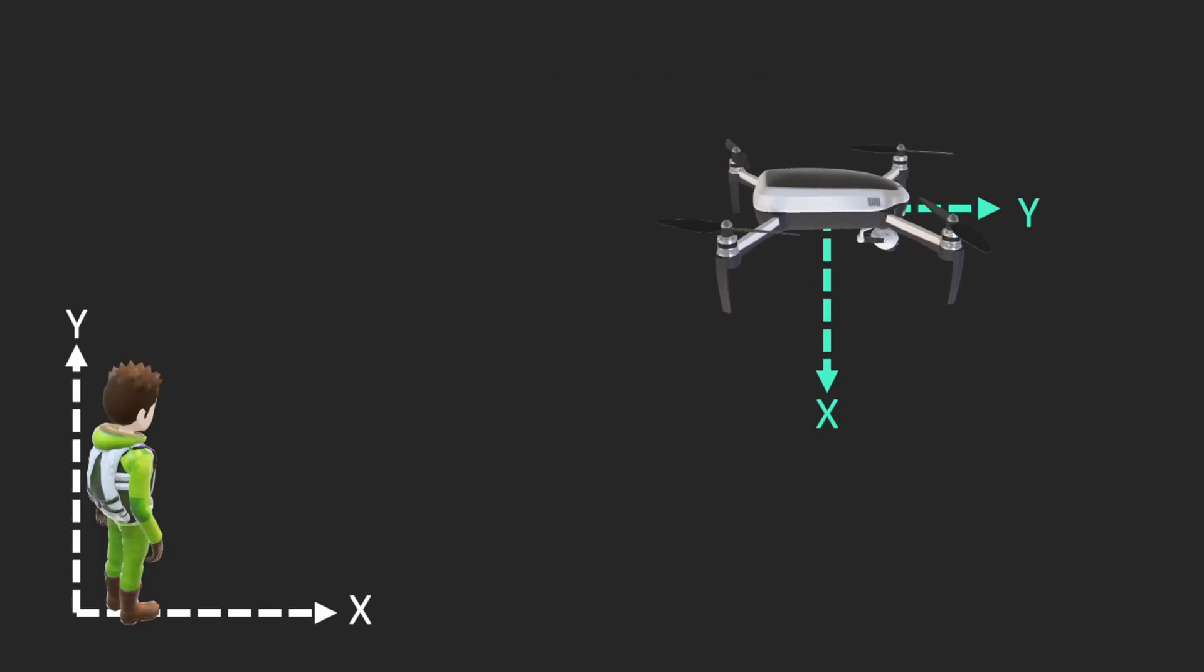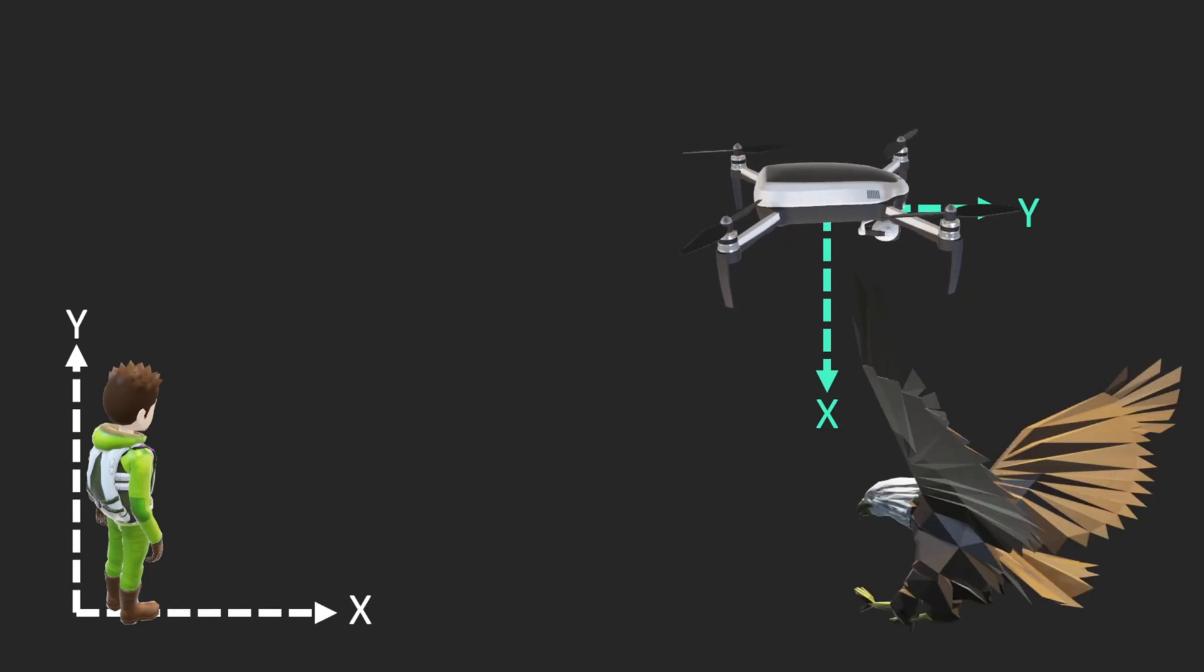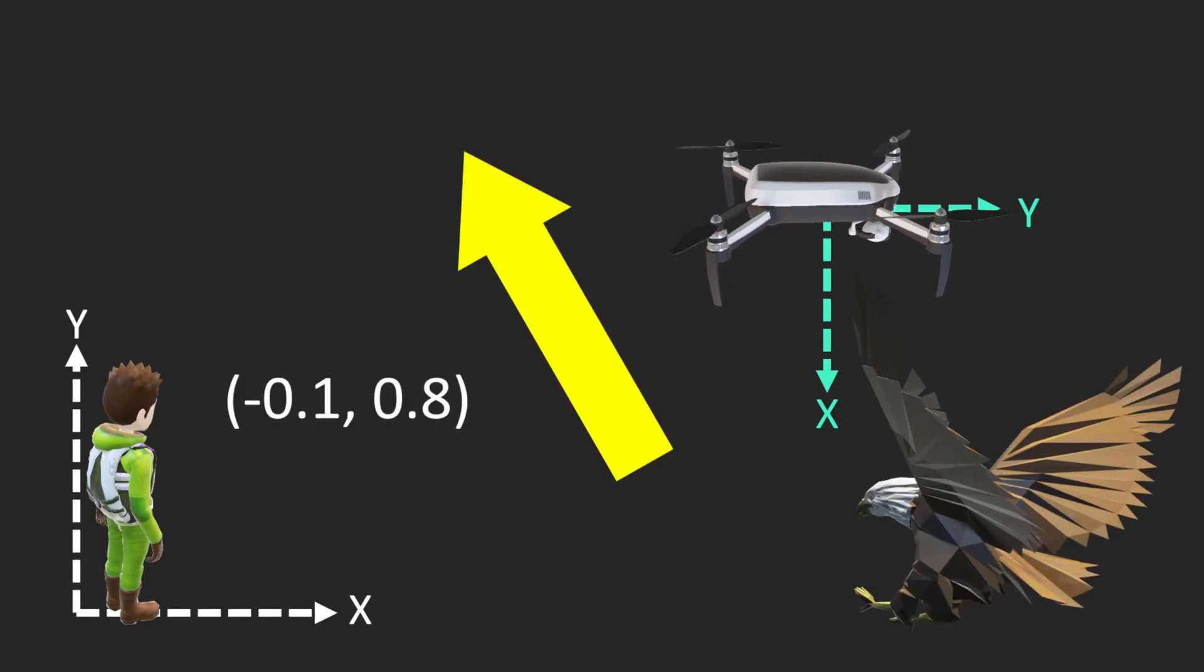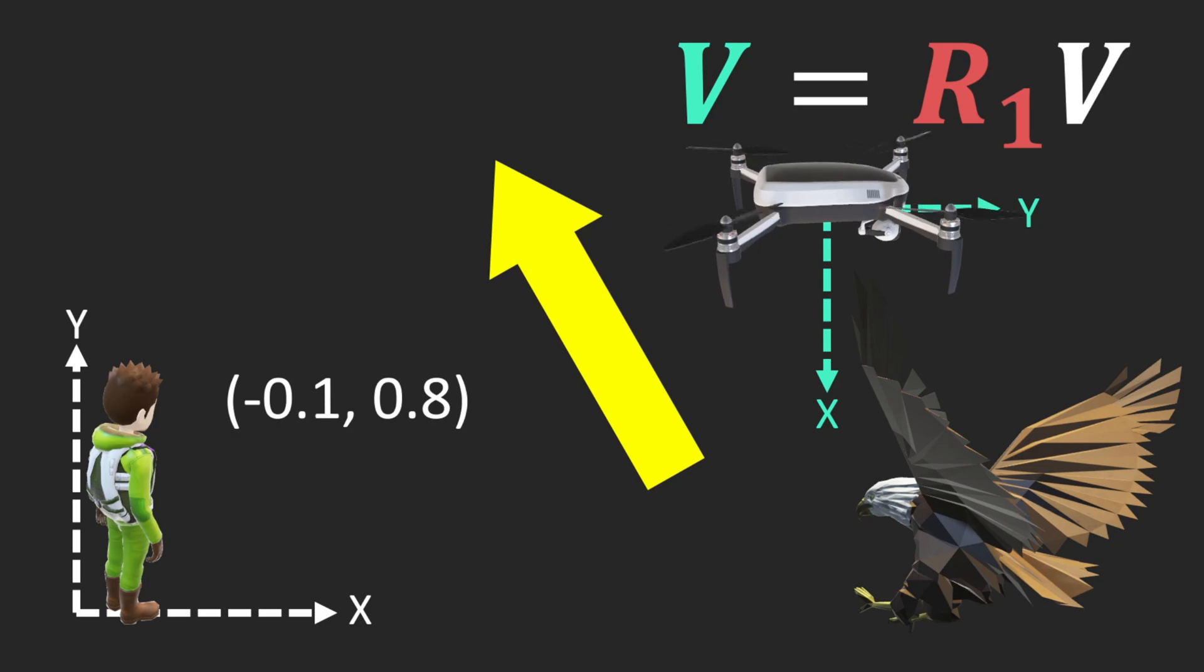To wrap up, you are a robotics engineer for drone autopilot software. Your drone detects an eagle coming in your ground frame coordinate. You know it needs to move to the direction of negative 0.1, 0.8. Now, what is the direction in terms of your drone's coordinate system? You can simply calculate this using the rotation matrix.